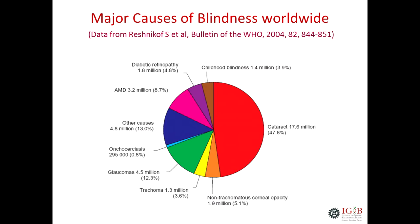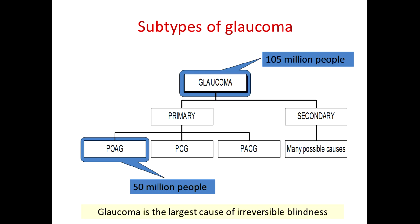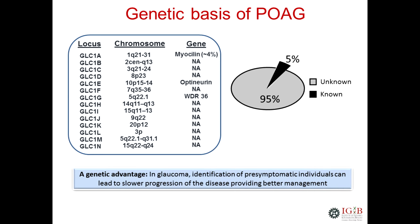Glaucoma is the largest irreversible cause of blindness in the world, and right now the estimate is that about 100 million people are affected with the disease. There are many subtypes. This talk will be focused on one particular subtype called primary open-angle glaucoma, which is the major subtype accounting for more than 50 percent of the clinical disease burden.